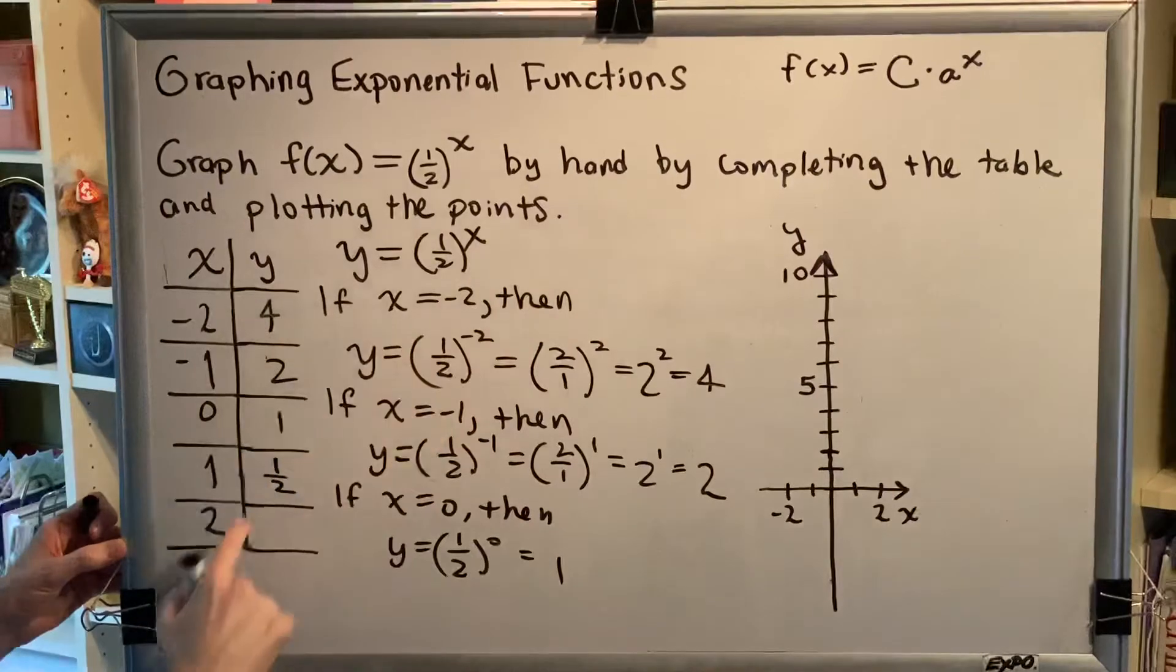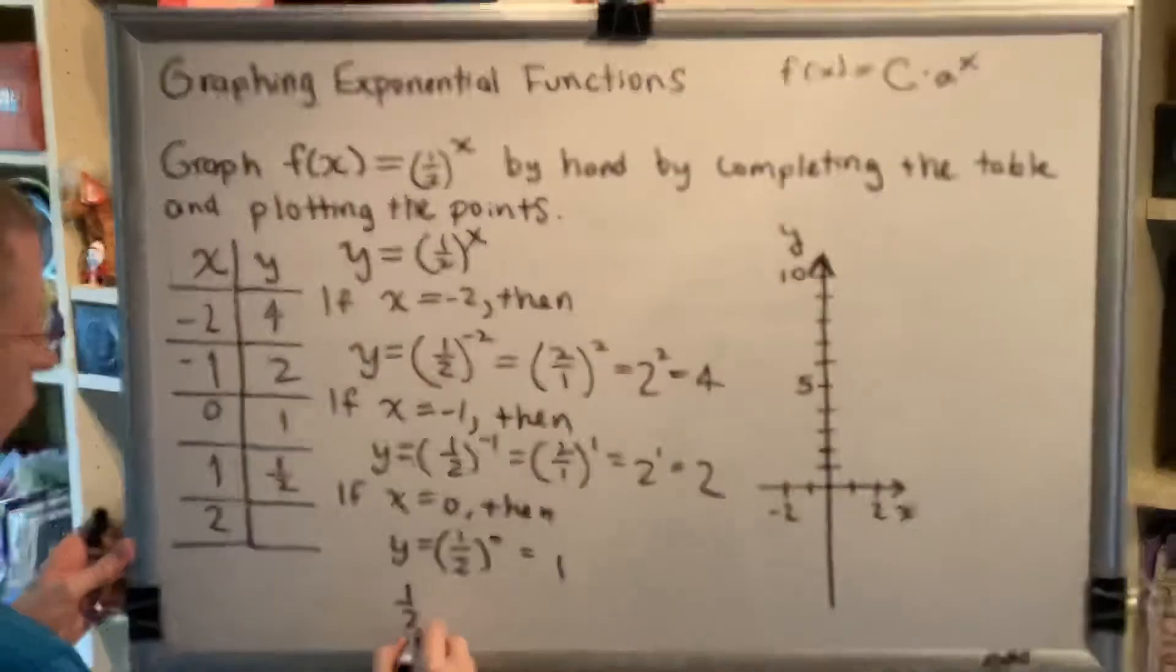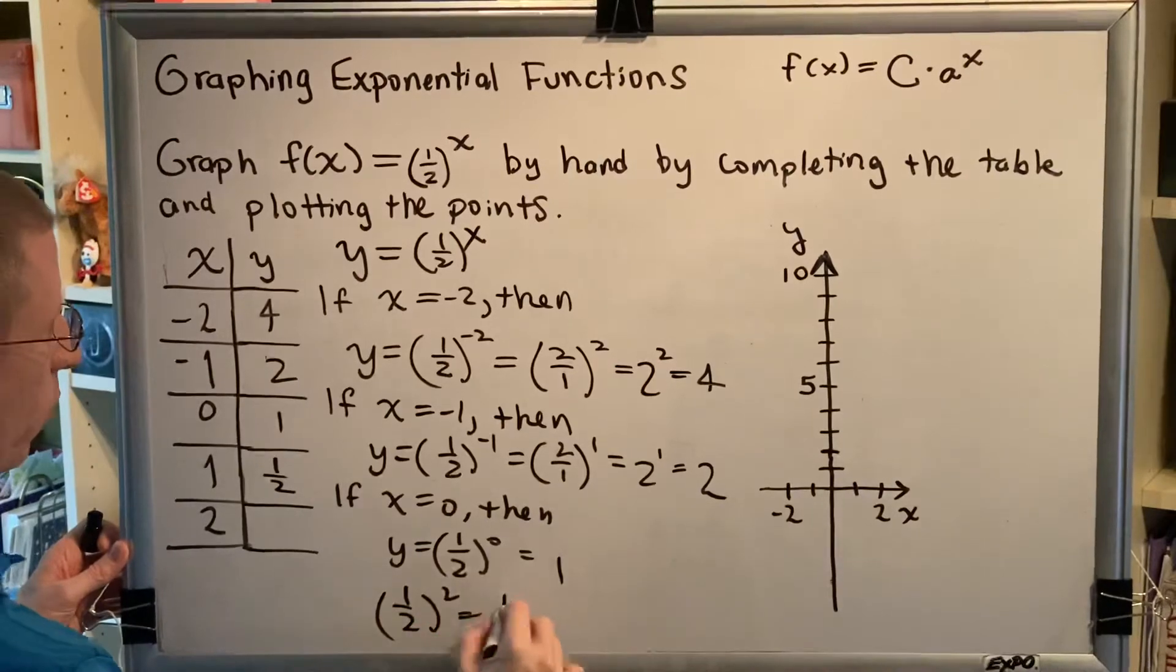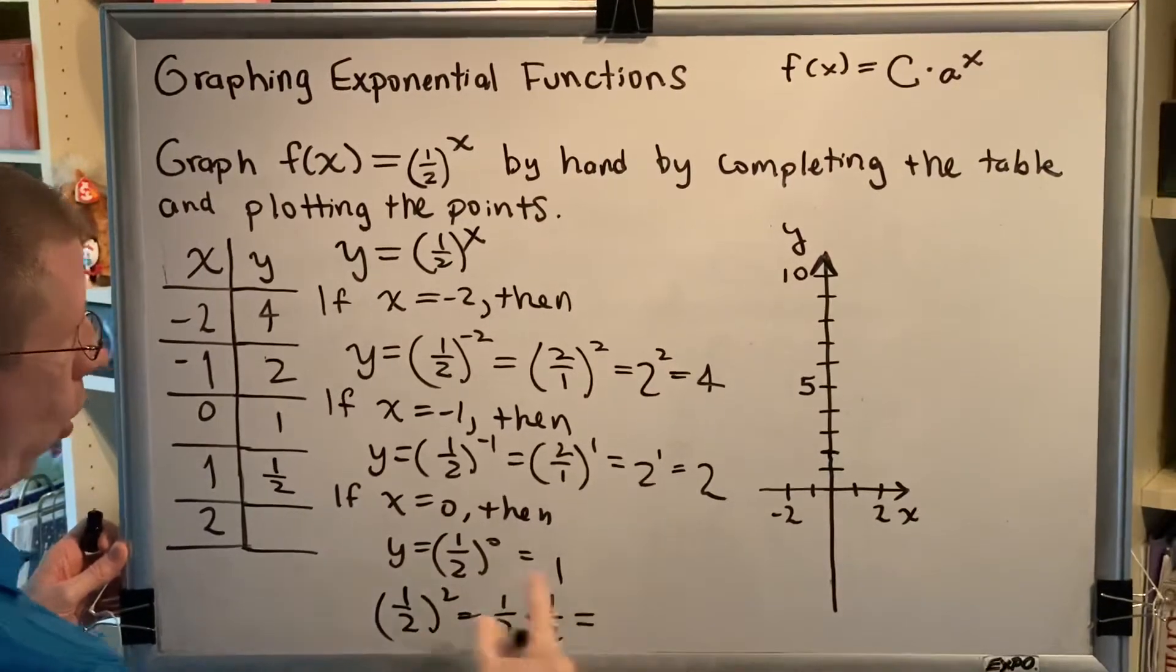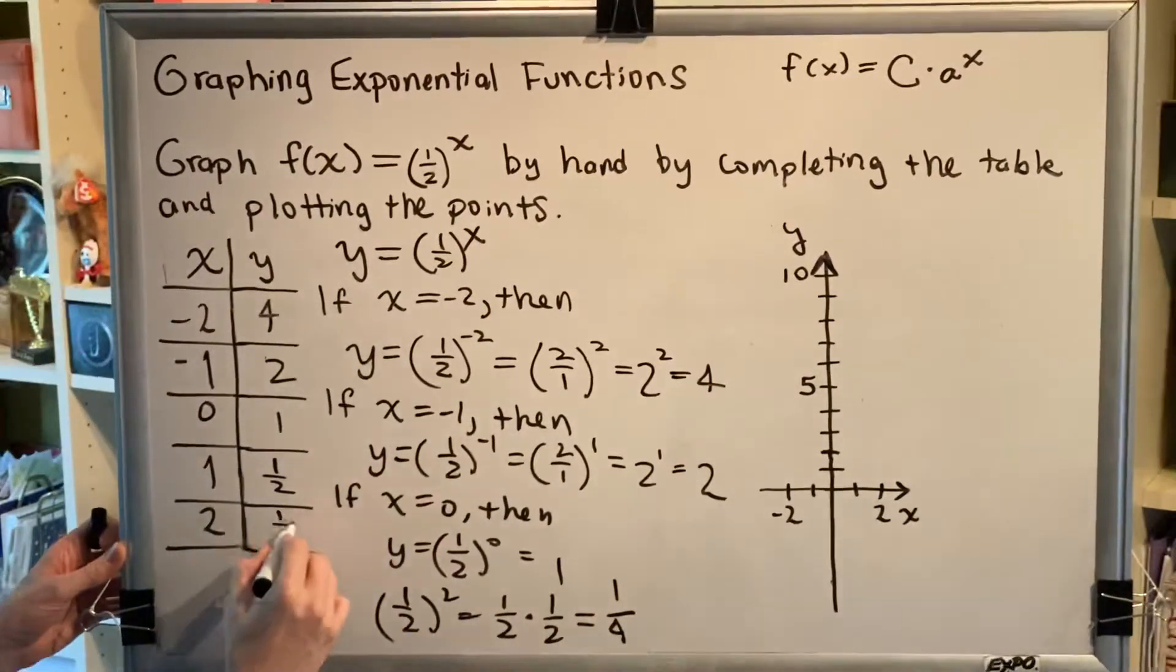And finally, with a 2 instead, we get y = (1/2)^2. Well, (1/2)^2 is the same thing as 1/2 times another 1/2. 1 times 1 is 1, 2 times 2 is 4, so we get 1/4.